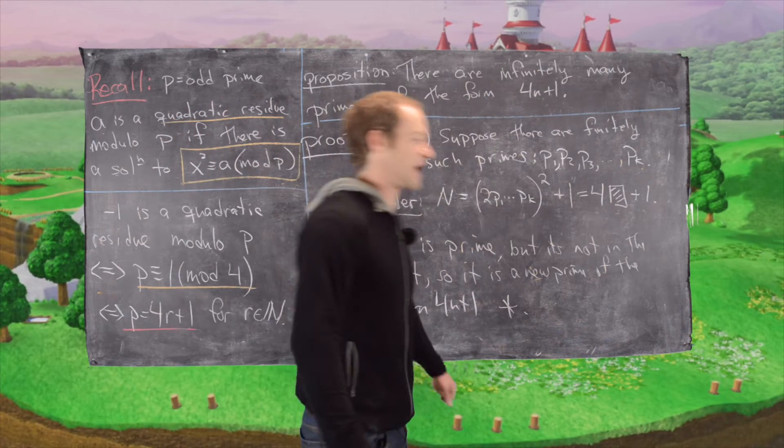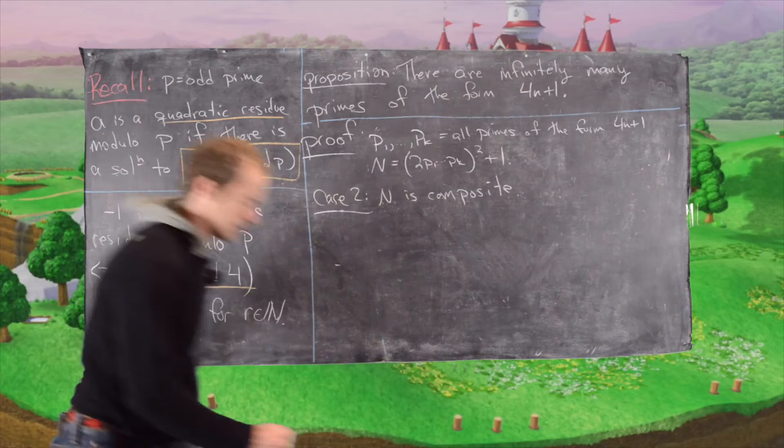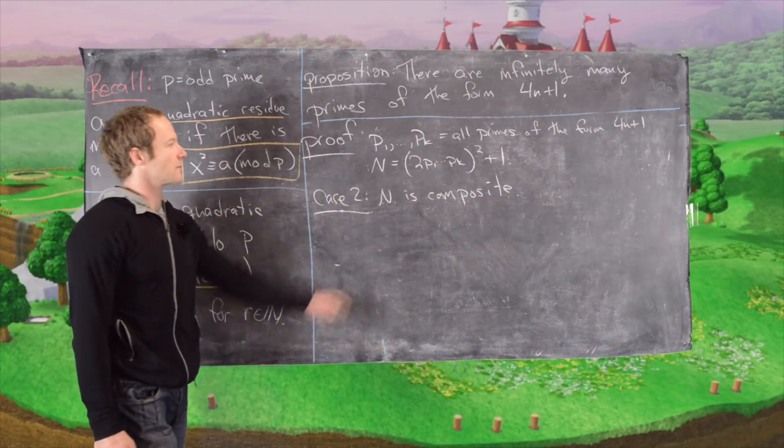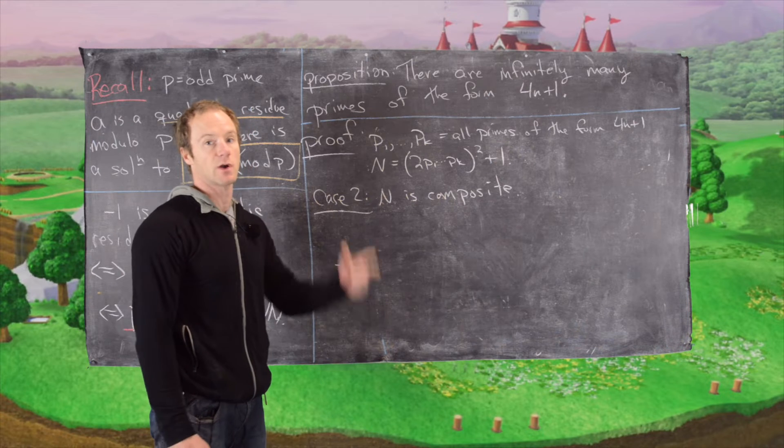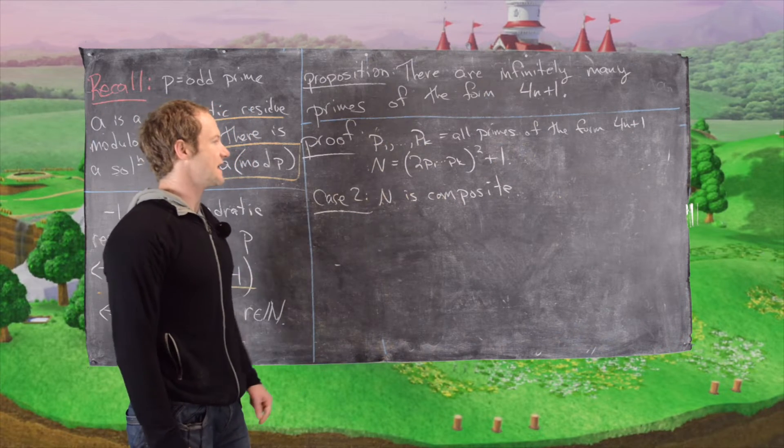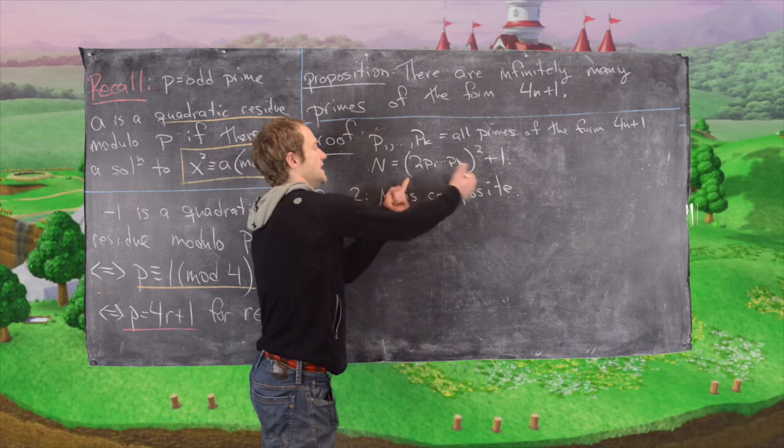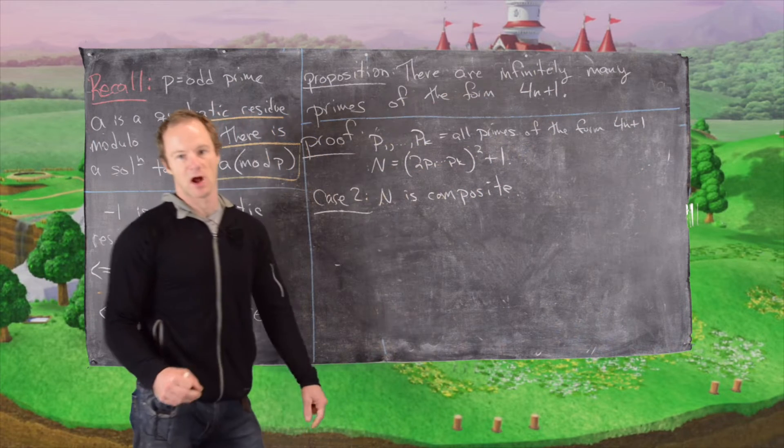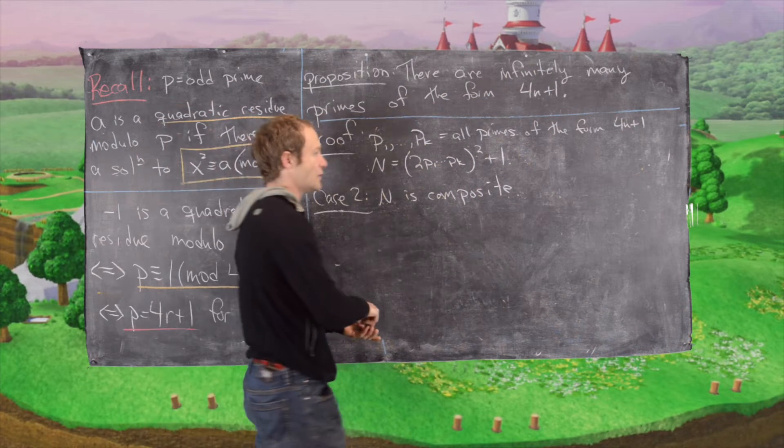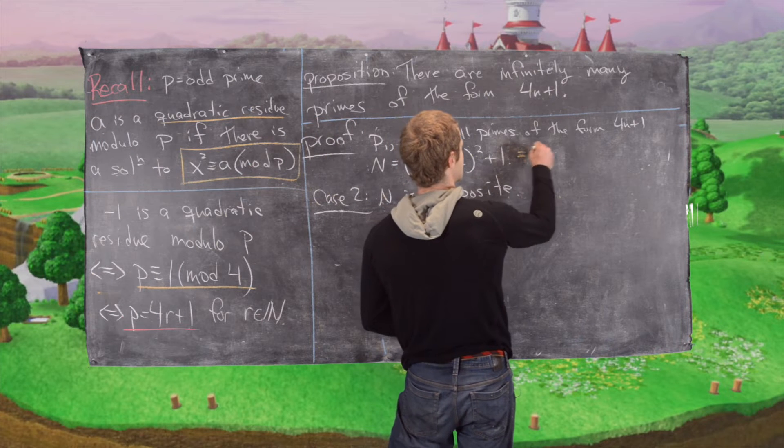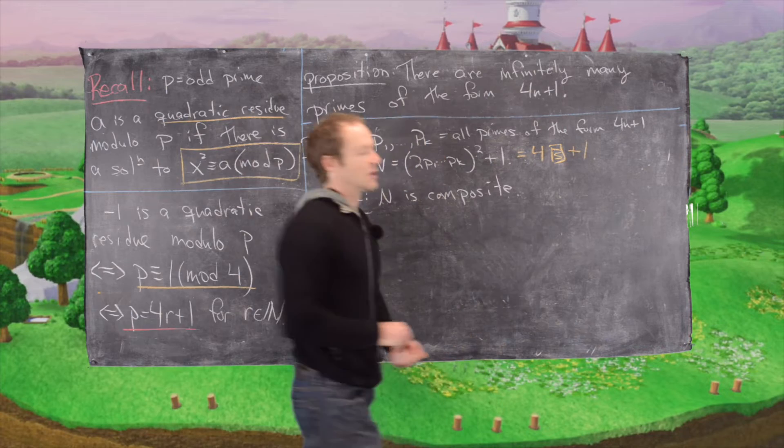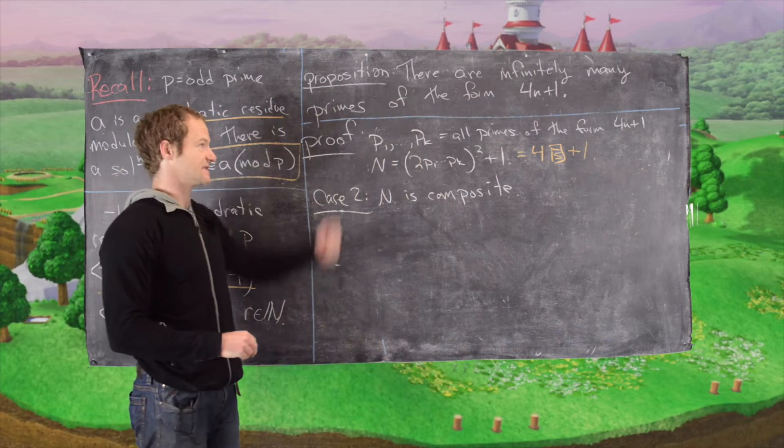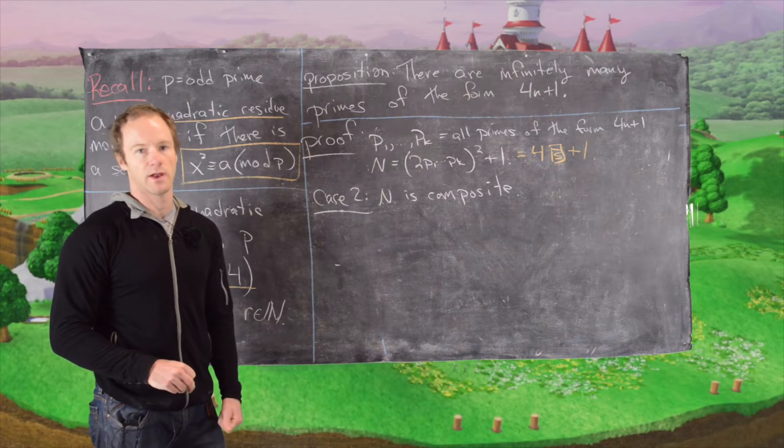Case 2: N is composite. So let's recall where we were. We had p1 to pk were all primes of the form 4n plus 1. We're working towards a contradiction. We set N equal to twice the product of those primes squared plus 1, and we noticed that this is in fact of the form 4 times something plus 1, which told us it couldn't be prime because it's not on that list.